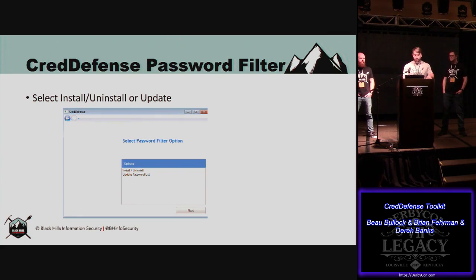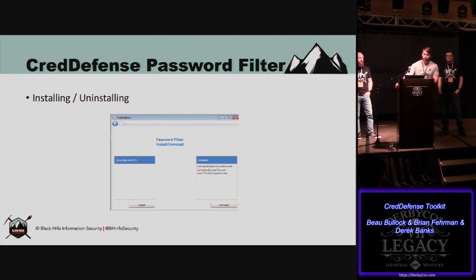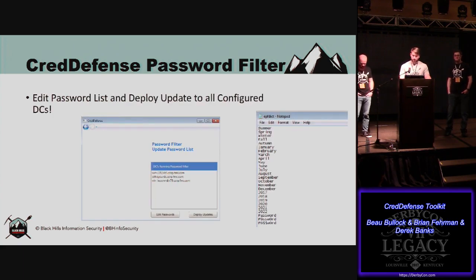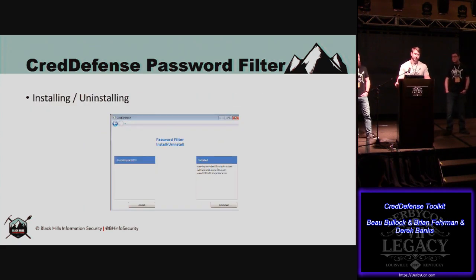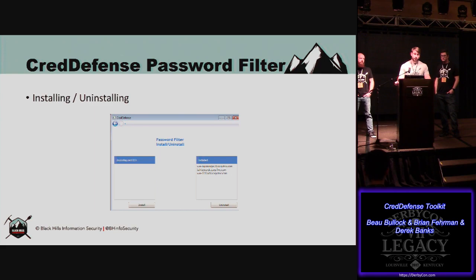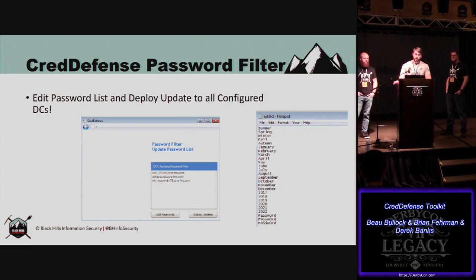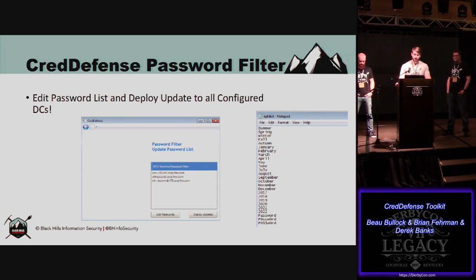To install or uninstall, just pop up the GUI and select the password filter option. If you want to install, it'll grab down a list of all the domain controllers in your environment, look at the registry to see if the password filter has been installed. If it hasn't, it ends up in the unconfigured column. If it is installed, it's in the installed column. Just click on the DC, click install — it'll deploy everything over and ask if you want to restart. First install does require a domain controller restart, so you'll want to do that one by one.